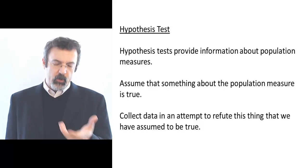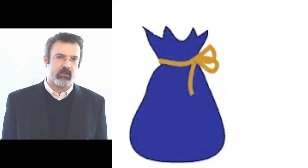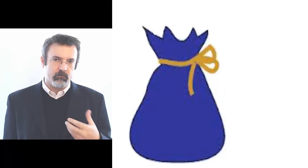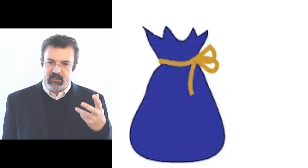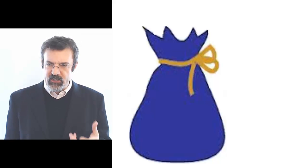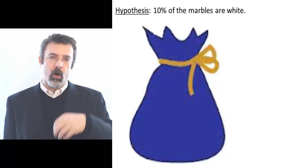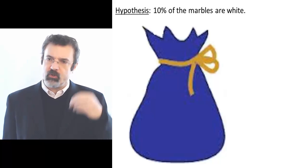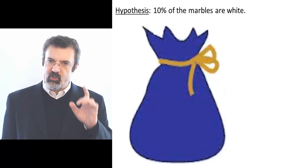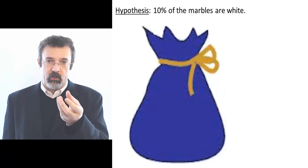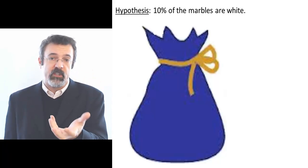Consider an example. Suppose we have a bag of black and white marbles. We don't know how many of the marbles are white and how many are black. The proportion of white marbles in the bag is like a population measure — it's something that is unobserved. So let's begin by making an assumption: let's assume that 10% of the marbles are white. We'll now draw marbles from the bag in an attempt to refute or fail to refute this assumption. To keep the example simple, when we draw a marble and look at it we put it back into the bag so that the total number of marbles doesn't change.